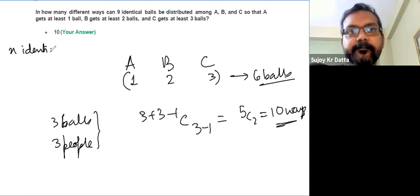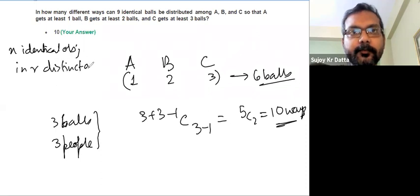identical objects in r distinct groups is n plus r minus one C r minus one. How we get to this formula,